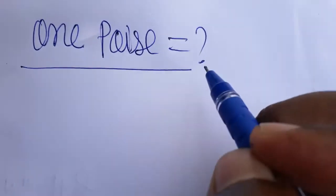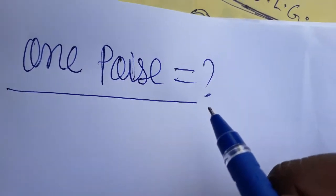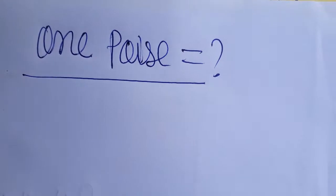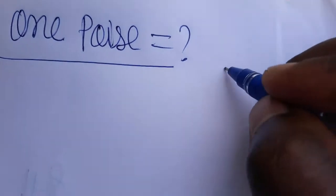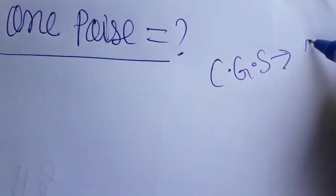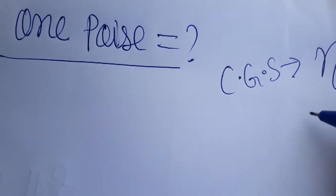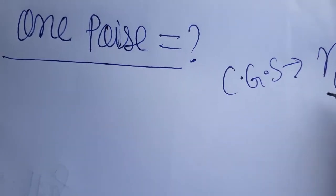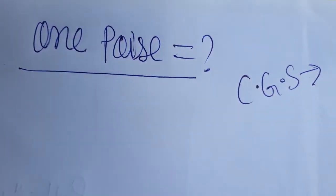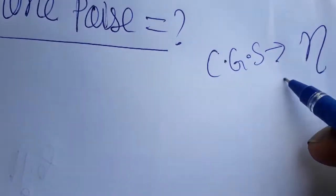Today we are going to learn what is 1 Poise. 1 Poise is the CGS system unit of coefficient of viscosity. When we refer to the coefficient of viscosity as a unit in the CGS system, it is called 1 Poise.